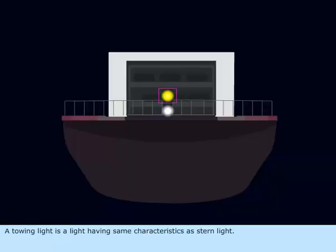A towing light is a light having the same characteristics as the stern light. It is kept above the stern light.